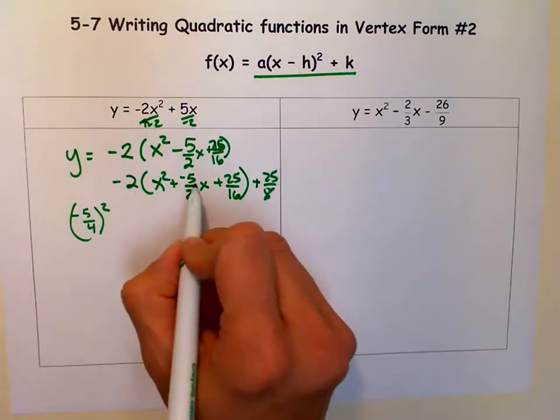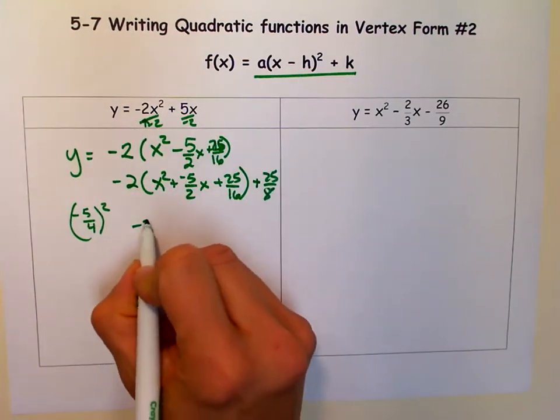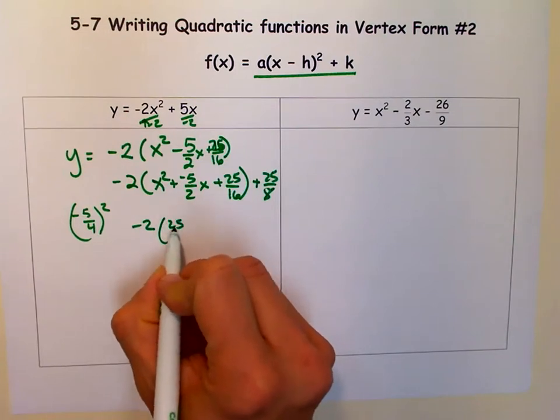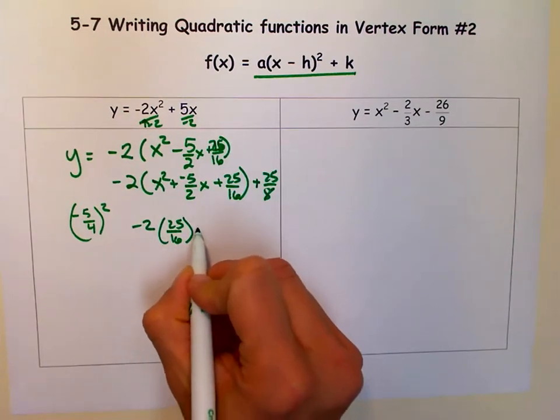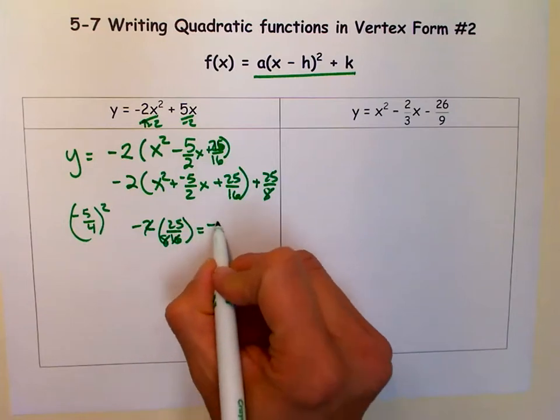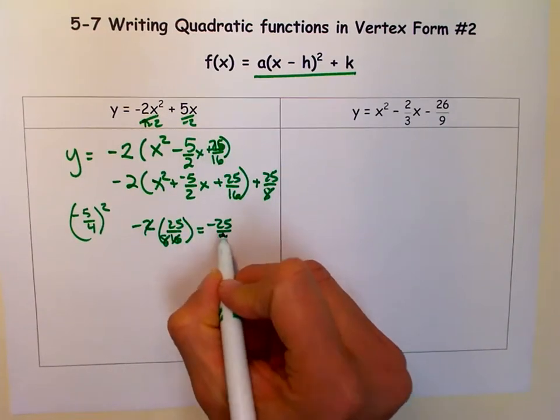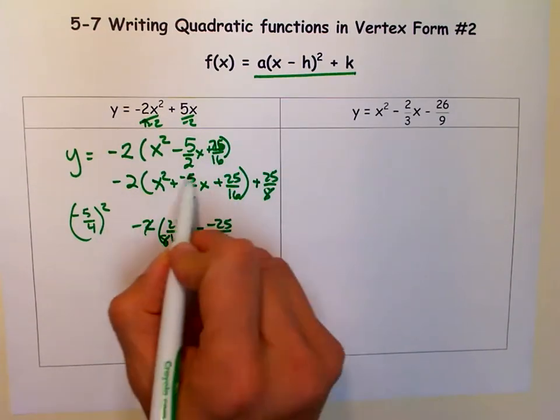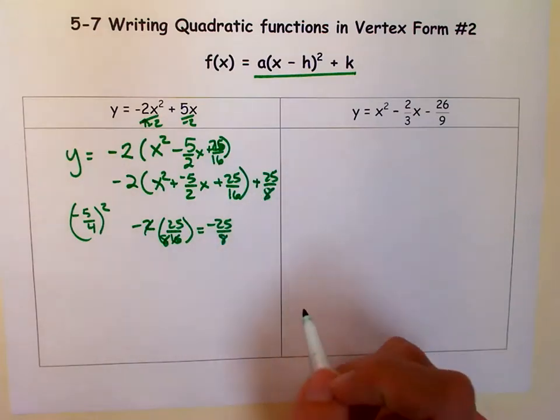Because if we distribute this negative 2, a negative 2 times 25 sixteenths. If we cancel there, we get a negative 25 eighths. And if we subtracted 25 eighths from this part, we have to add 25 eighths to that part.